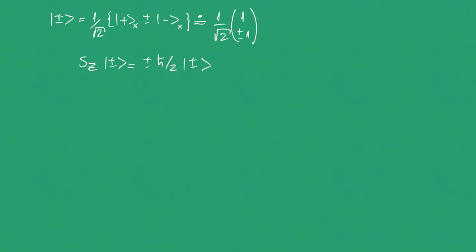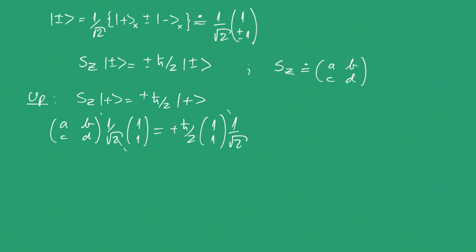And now we just have to assume an operator SZ represented by this matrix. For spin-up, we can write this eigenvalue equation, and we can plug all the values we already know here. SZ is represented by this matrix. The ket plus is given by this. These terms cancel out. If we multiply here, we end up with A plus B equal to H bar over 2, C plus D equal to H bar over 2.